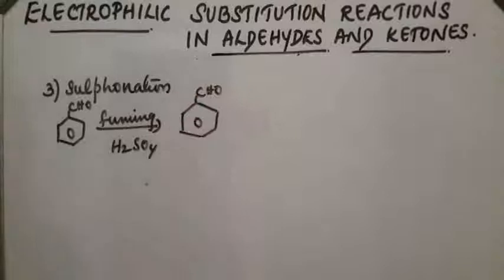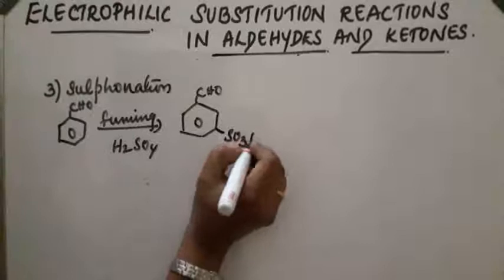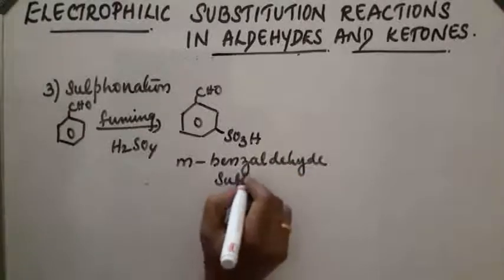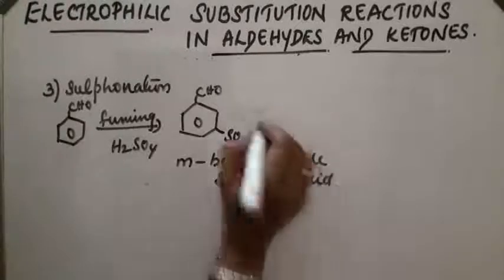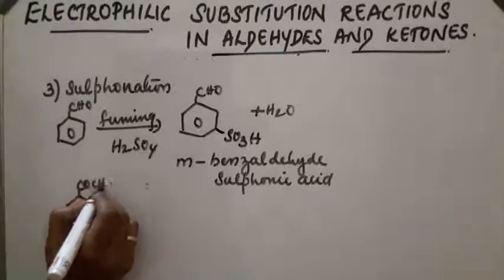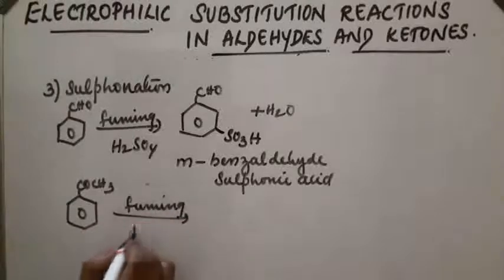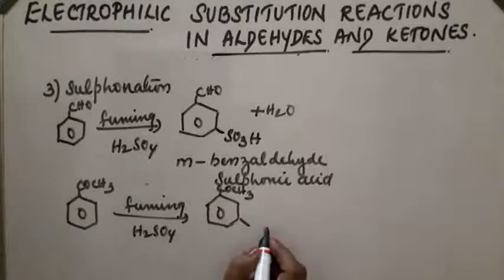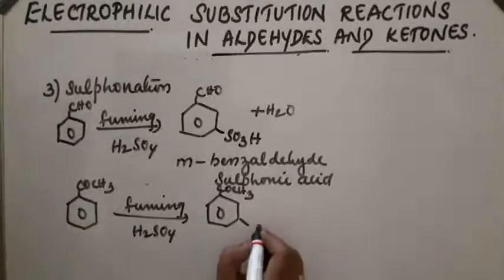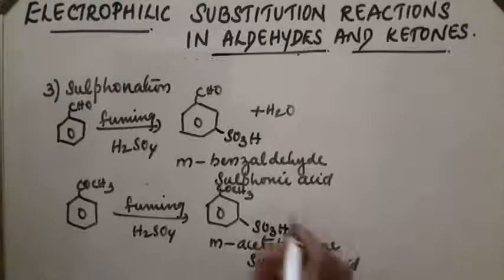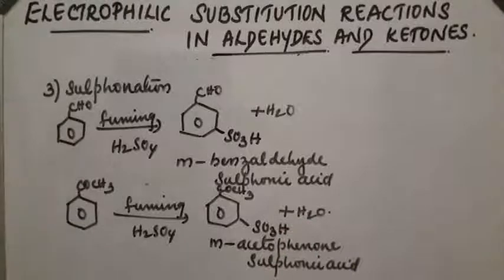For sulfonation: benzaldehyde with fuming sulfuric acid gives meta-benzaldehyde sulfonic acid (SO3H) plus H2O. Similarly, acetophenone with fuming sulfuric acid gives meta-acetophenol sulfonic acid plus H2O. These are the different electrophilic substitution reactions in aldehydes and ketones.